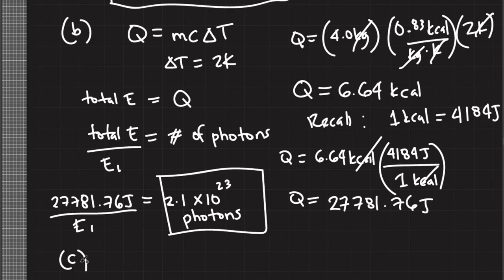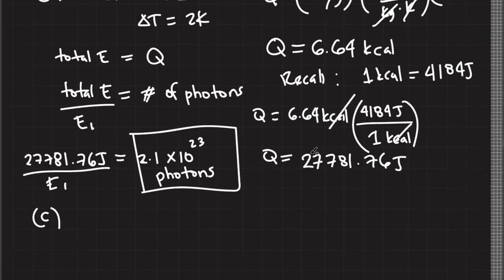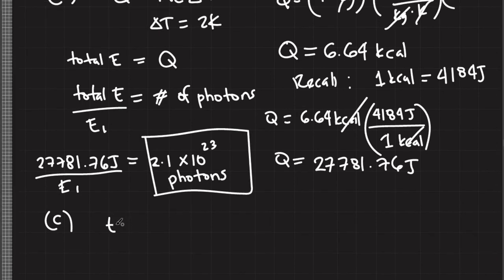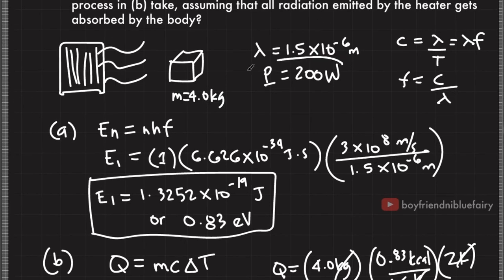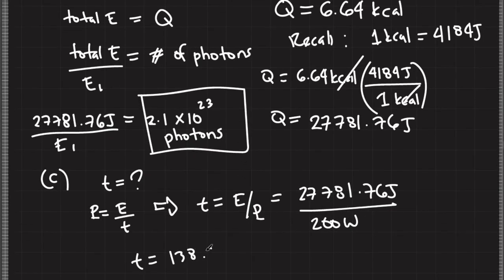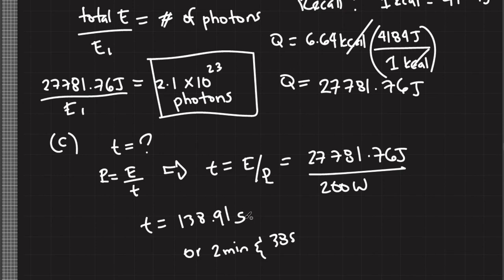In part C, we find how long the heating process takes assuming all radiation emitted by the heater is absorbed by the body. From mechanics, power equals energy transferred per unit time, so time equals total energy divided by power. Time = 27,781.76 joules / 200 watts = 138.91 seconds, or approximately 2 minutes and 38 seconds.